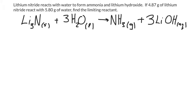Here are two examples of working with limiting reactants. The first one: lithium nitride reacts with water to form ammonia and lithium hydroxide. If 4.87 grams of lithium nitride react with 5.8 grams of water, find the limiting reactant. So here we're going to practice finding the limiting reactant.